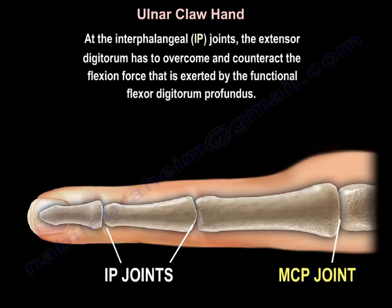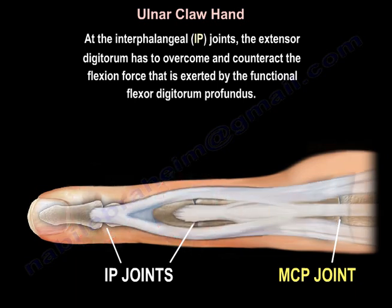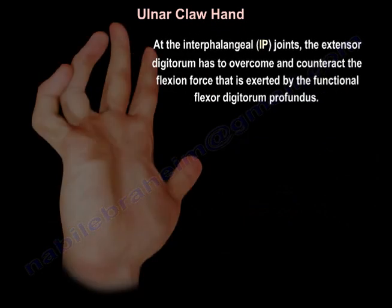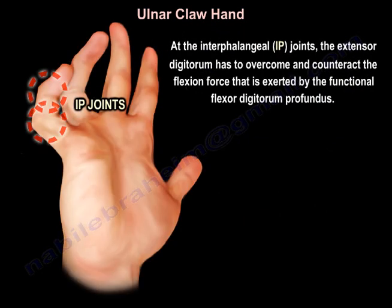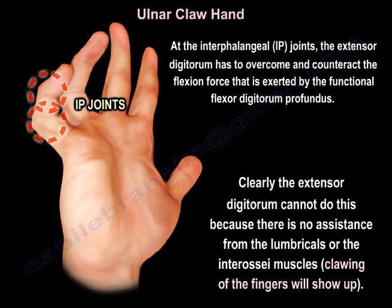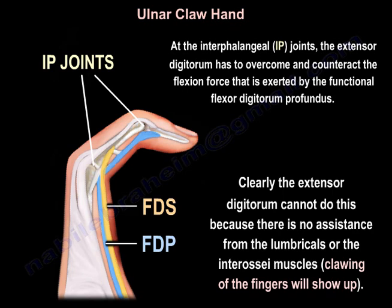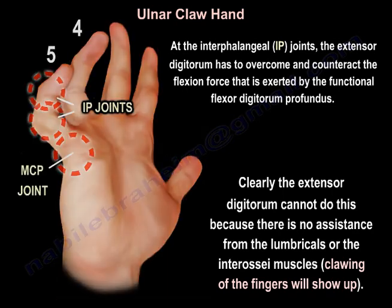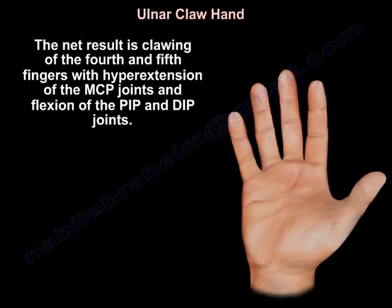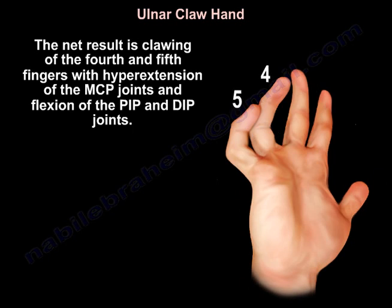Without the function of the intrinsics, the extensor digitorum is unopposed, causing hyperextension of the fourth and fifth digits at the metacarpophalangeal joints. At the interphalangeal joints, the extensor digitorum cannot overcome the flexion force exerted by the functional flexor digitorum profundus, because there is no assistance from the lumbricals or the interosseous muscles, and clawing of the fingers results. The net result is clawing of the fourth and fifth fingers with hyperextension of the MCP joints and flexion of the PIP and DIP joints.